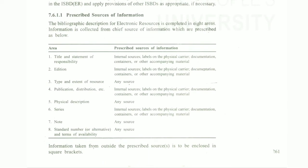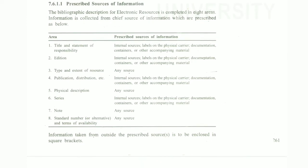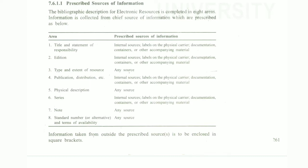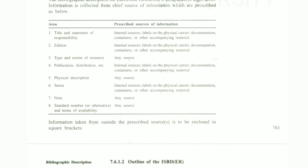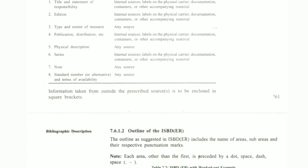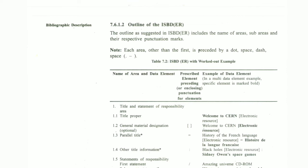Then comes the prescribed source of information. The bibliographic description for electronic resources is complete in 8 areas. Information is collected from chief sources of information, covering areas such as the title and statement of responsibility. The 8th area is the standard number. There is also an outline of the ISBD for electronic resources, which includes areas, sub-areas, and their representative punctuation marks.